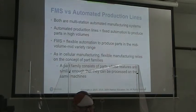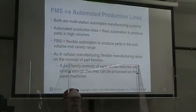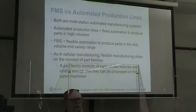Flexible manufacturing systems are our flexible automation that produce parts in the mid-volume, mid-variety range. As with cellular manufacturing, flexible manufacturing is going to rely on the concept of part families. A part family, to remind you, consists of parts whose features are similar enough that they can be processed on the same machines.